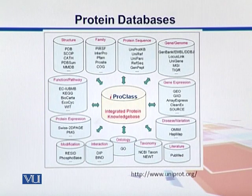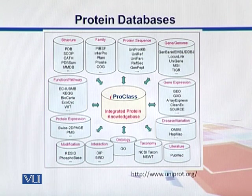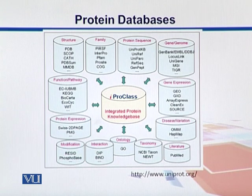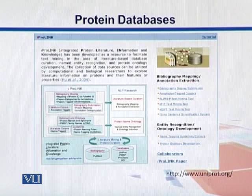As mentioned earlier, IPRO is basically an integration of different protein resources. We can have sequences, protein expression data, and information about protein modifications. We can also look into ontology the same way in IPRO, and we can integrate genomic data with proteomic data. IPRO link provides the literature information and most of the research papers.